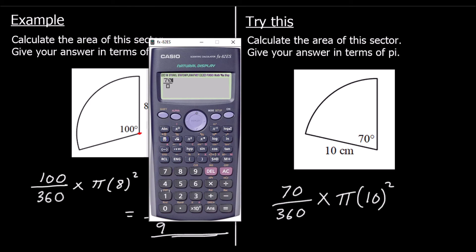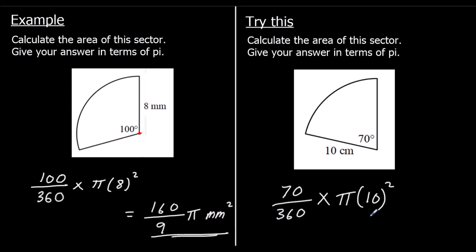So 70 over 360, times pi, times 10 squared. We've got our answer of 175 over 9 pi. And the units this time are in centimeters squared, since the radius was in centimeters and we measure area in squares.